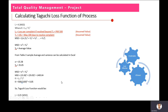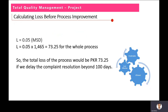Based on the Taguchi loss function, we calculated the loss before any improvement — that is the current system. The loss is K × MST. MST we calculated is 1465, giving a loss of 73.25 for the whole process. So the total loss of the process would be 73.25 per complaint delayed beyond 100 days.